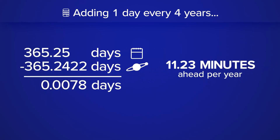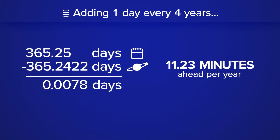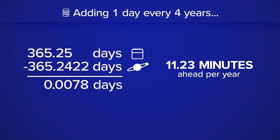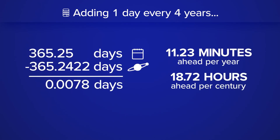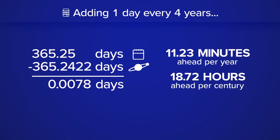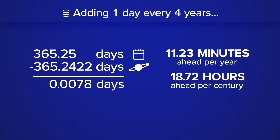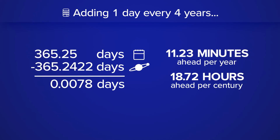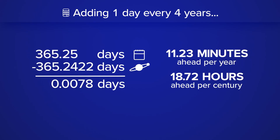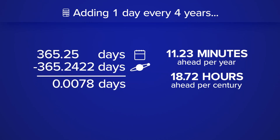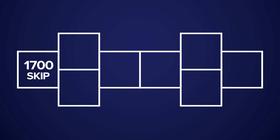And over 100 years, our calendar would be about 18 hours off, which doesn't sound like a huge problem. But over the centuries, this would eventually throw off our calendar. To help bring this number closer to zero, we'll actually skip leap years to help realign the calendar to the solar year.